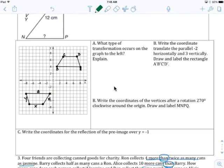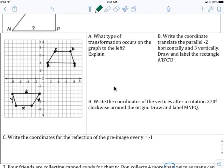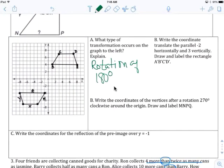Name a type of transformation that occurred to the left. Looks like a rotation of 180 degrees, counter or clockwise. It doesn't matter. Write the coordinates. They want the coordinate. Translate the parallelogram negative 2 horizontally, positive 3 vertically. Label the triangle. Label A, B prime, C prime, and D prime.